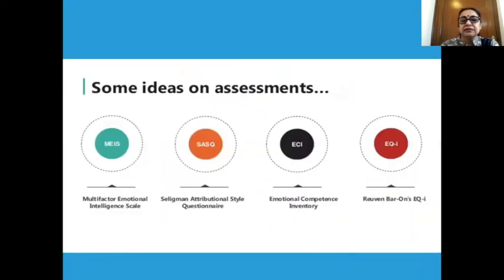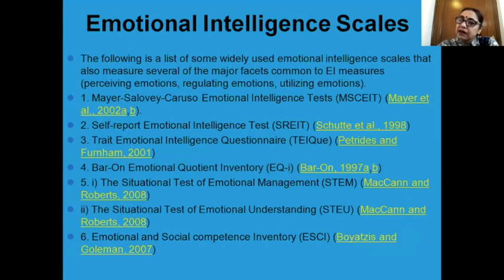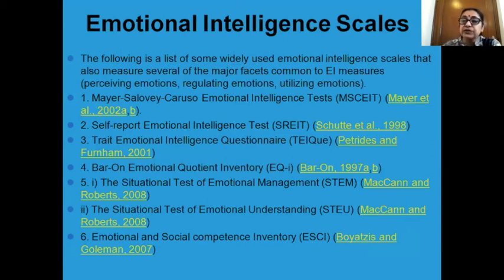There are several detailed scales created to measure emotional intelligence. Some of them include the Multifactor Emotional Intelligence Scale, the Seligman Attributional Style Questionnaire, the Emotional Competence Inventory, and the Reuven Bar-On EI. You need to be very familiar with them if you want to use them. They all have their advantages and will fit different situations, helping you to perceive emotions better, regulate them, and utilize your understanding to the best possible manner.